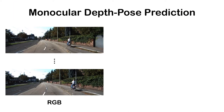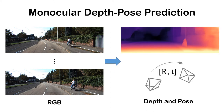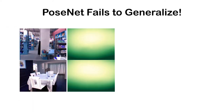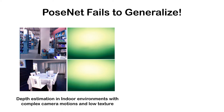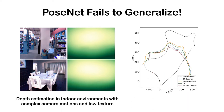In this work, we focus on self-supervised depth and pose estimation from monocular videos. Most of the existing solutions use PoseNet to learn camera ego-motions. However, we found that PoseNet-based methods have poor generalization performance under challenging scenarios, such as indoor environments and unseen camera ego-motions.